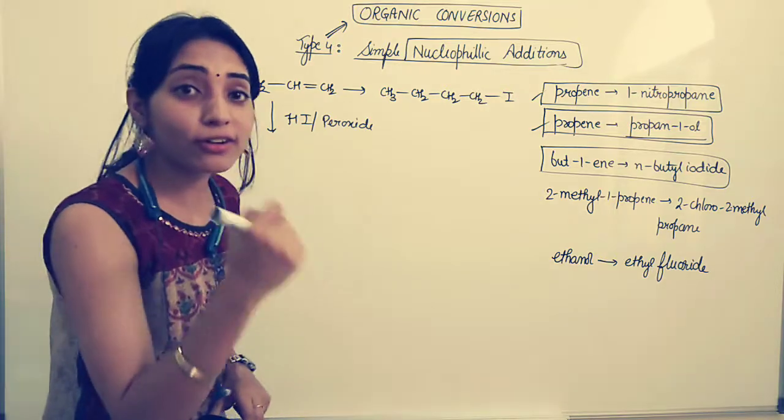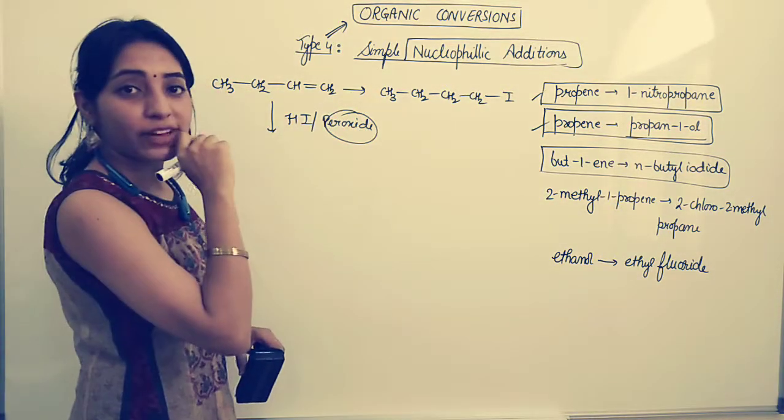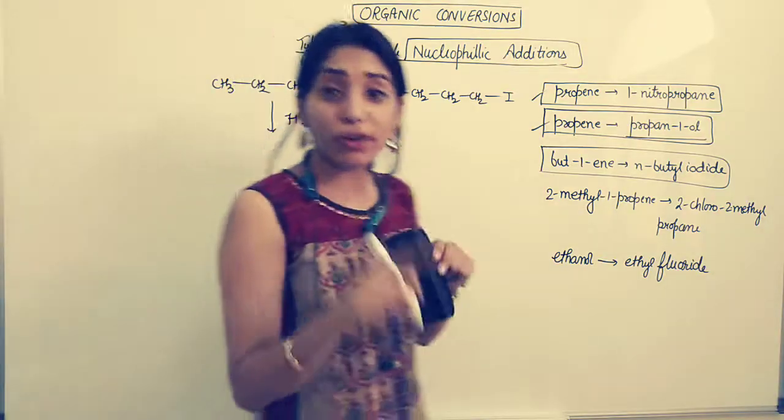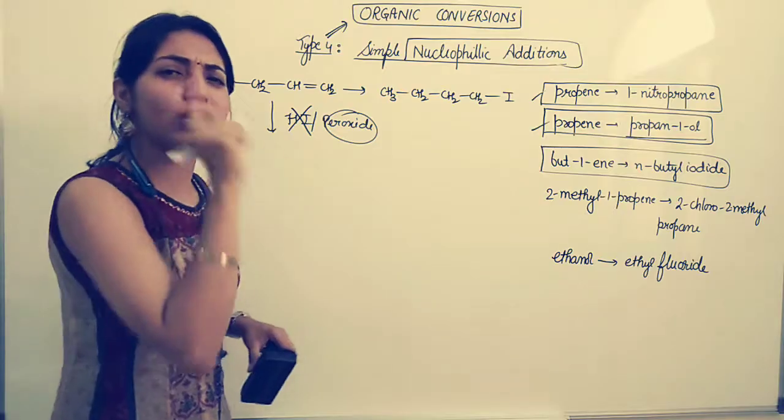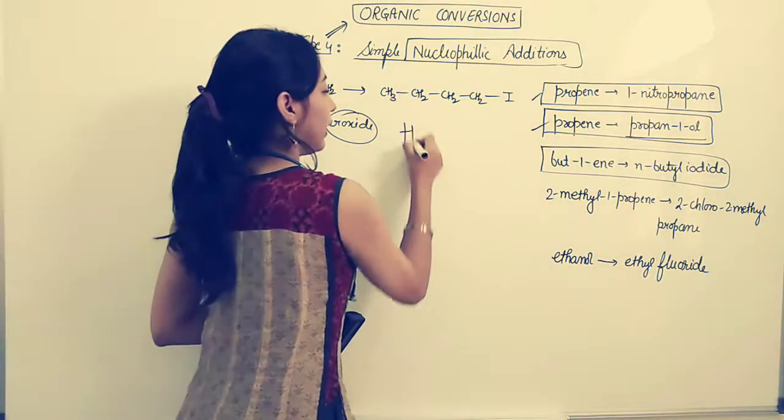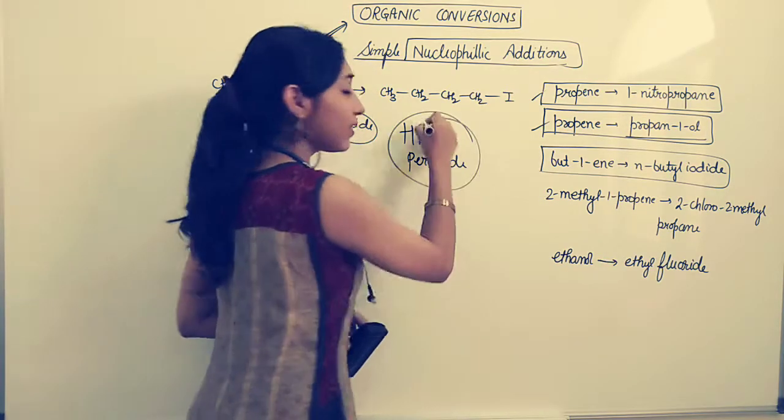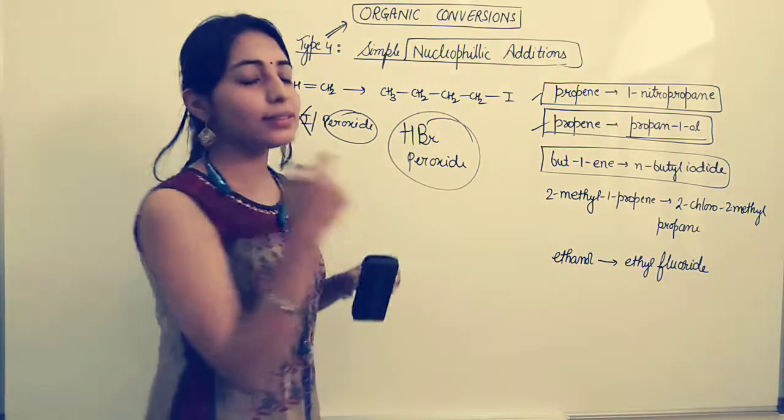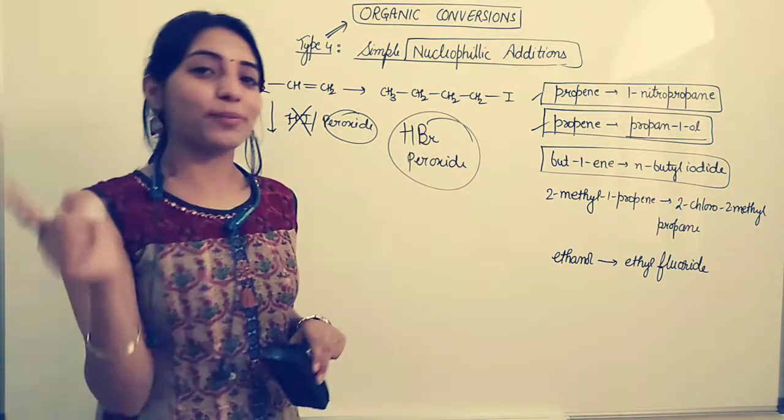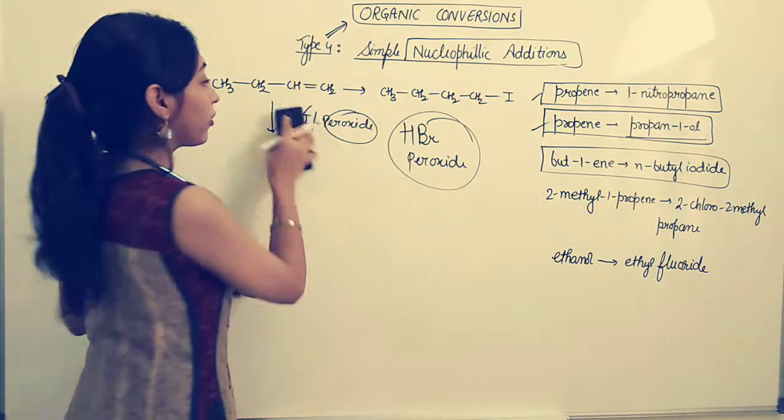But remember, this peroxide effect or the anti-Markovnikov's rule or the Kharash effect is valid only, only, only for HBr peroxide. So this is the fact that you have to remember by doing conversions. Again, if you need the details, do let me know. I will help you out in some other video. So we cannot directly add HI in the presence of peroxide.